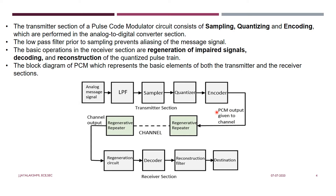The output is going to be a pulse code modulated signal. Before going to the sampling part, you are going to make use of a low pass filter where this low pass filter is going to prevent the aliasing problem. All these things were already discussed in your previous semester while you studied analog communication. The analog message is converted into a binary sequence — PCM is nothing but an analog to digital converter comprising a sampling circuit, quantizing, and encoding part.